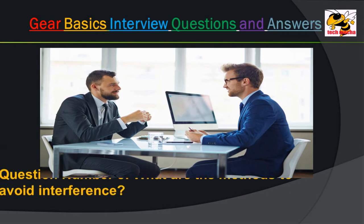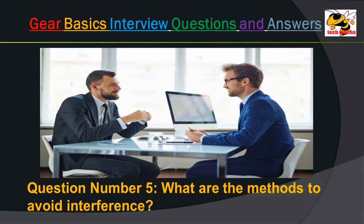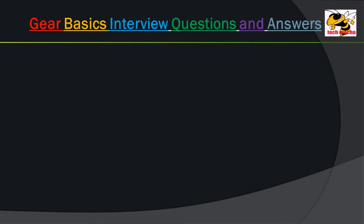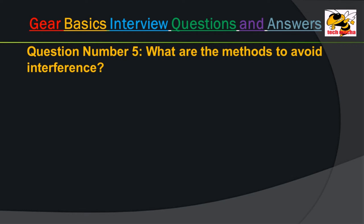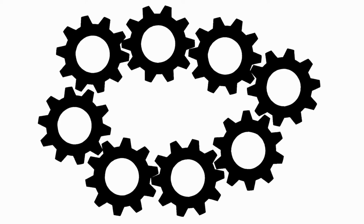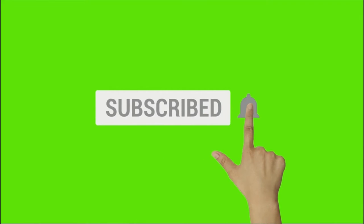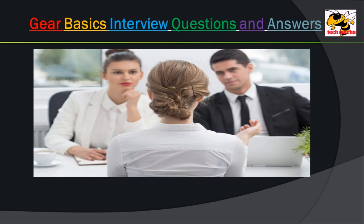Question number 5: What are the methods to avoid interference? Answer: The methods to avoid interference are: the height of the teeth may be reduced, the pressure angle may be increased, and the radial flank of the pinion may be cut back (undercutting).